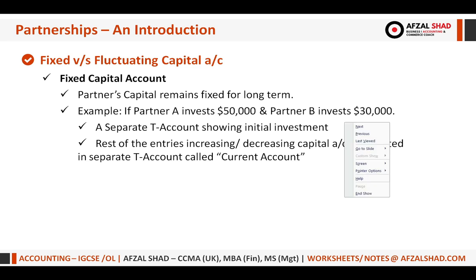Partners' capitals remain fixed for the long term. For example, if Partner A invests 50,000 and Partner B invests 30,000, we prepare capital accounts keeping those figures fixed and make no further entries there. All other entries — profits, losses, interest on capital, interest on drawings, salaries — are added or subtracted in a separate T-account called the current account.